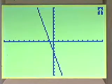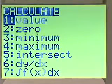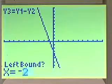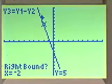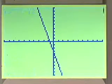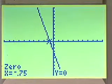Now we can graph y3, find the x-intercept. Calc, zero. Our left bound we might put in as negative 2. Right bound could even be 0. Our guess could be negative 1.